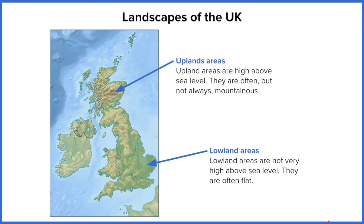We're going to look at two varieties — we can split our home up into upland areas and lowland areas. Looking at upland areas first: these are high above sea level and generally they're the mountainous and hilly areas of the UK. On our map we can see those are the browns and yellows, and they're predominantly in the north and west of the UK.